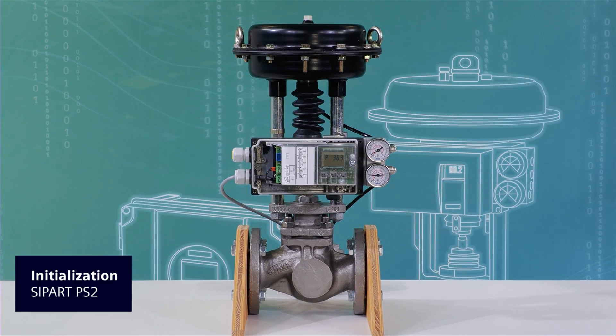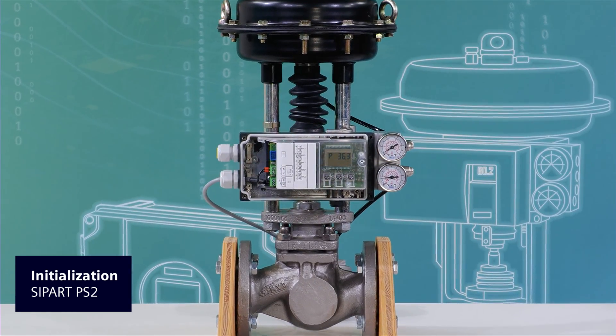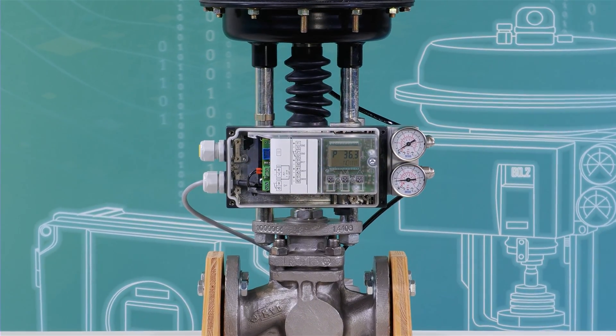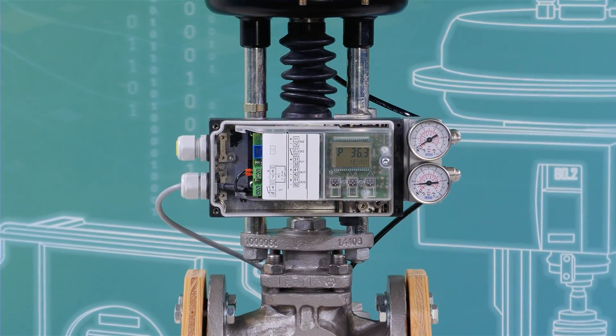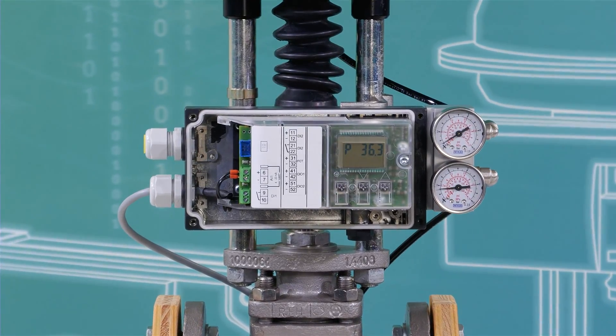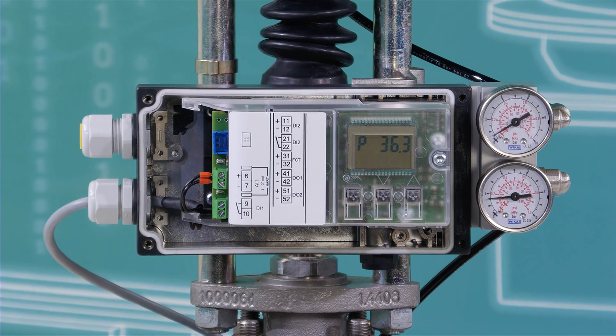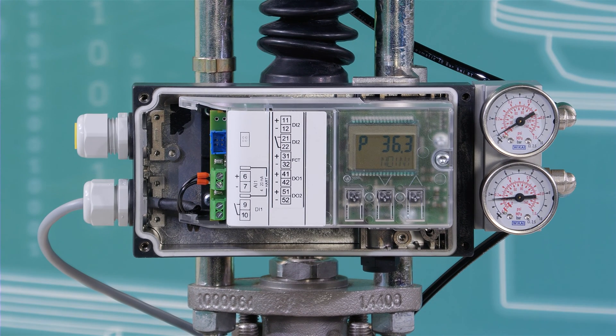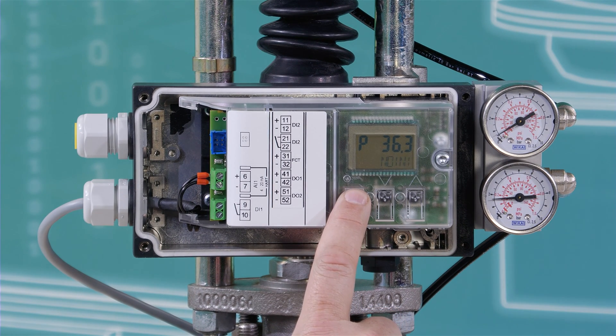Now we will start the initialization with a linear actuator. The PS2 is mounted with our standard mounting solutions. The supply air and power supply are connected. Now we push the hand button for several seconds to enter the parameter menu.